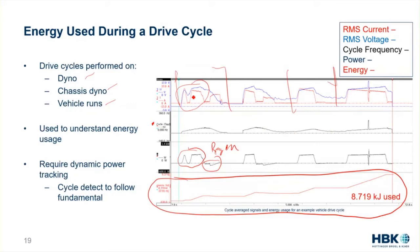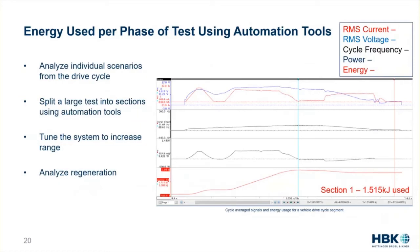A lot of people want to break drive cycles into different sections — the first section, the second section, the third section — to analyze these individually, either to understand how competitors do things, compare supplier parts for efficiency, or largely to calibrate and tune the system. In our eDrive system, because we're recording all the data and have a wide variety of automation tools, we can take triggers — the driver throws a trigger at the beginning and end — and use that in post-processing to run automation on different segments. We can also trigger on values, like every time speed hits zero, start a new segment.